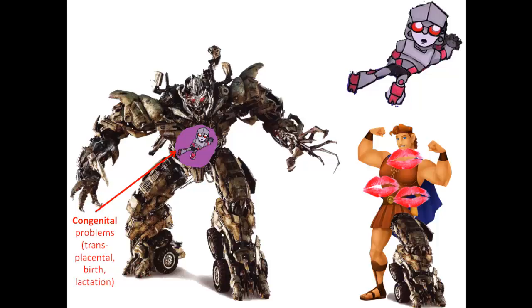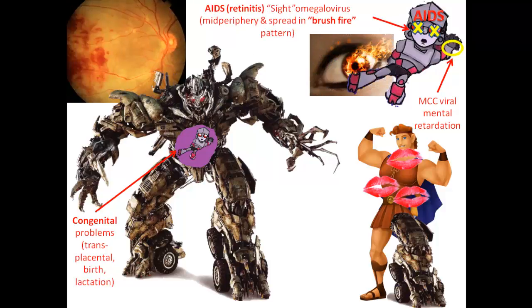We're going to take the baby and examine a few features. The hand has a single palmar crease, very significant of mental retardation — CMV is the most common cause of viral mental retardation. We're also going to cross the eyes out, causing blindness, and put the word AIDS above, because AIDS patients usually get cytomegalovirus retinitis. The retinitis starts in the mid-periphery of the retina and spreads centrally toward the optic disc like a brush fire. You can remember it by 'sight-o-megalovirus,' causing AIDS retinitis or blindness.